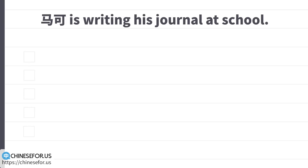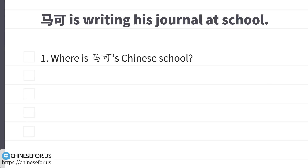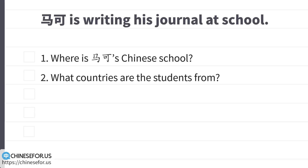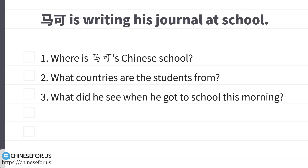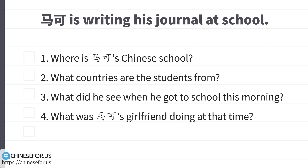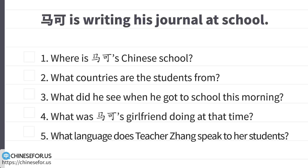Please read after me and try to get the following information. Ma Ke is writing his journal at school. 1. Where is Ma Ke's Chinese school? 2. What countries are the students from? 3. What did he see when he got to school this morning? 4. What was Ma Ke's girlfriend doing at that time? 5. What language does teacher Zhang speak to her students?